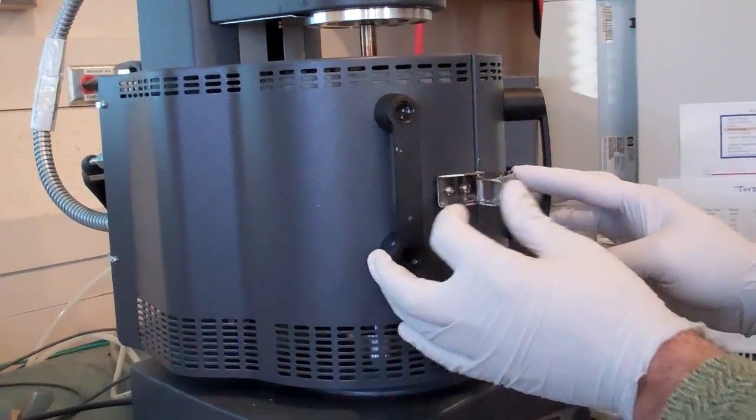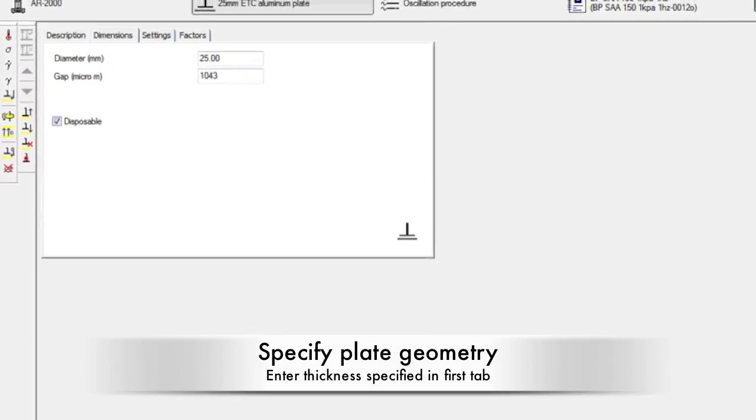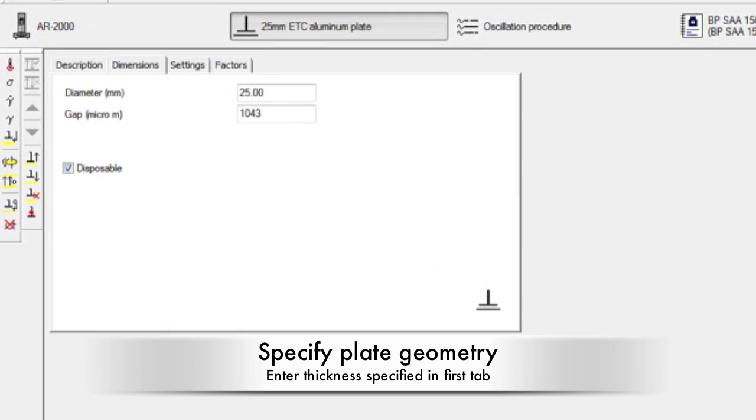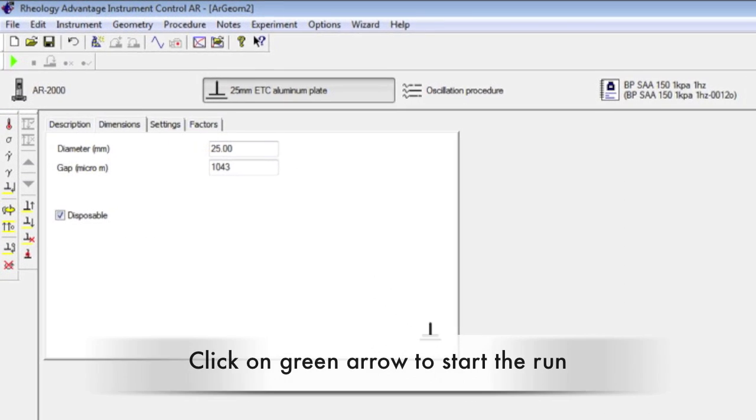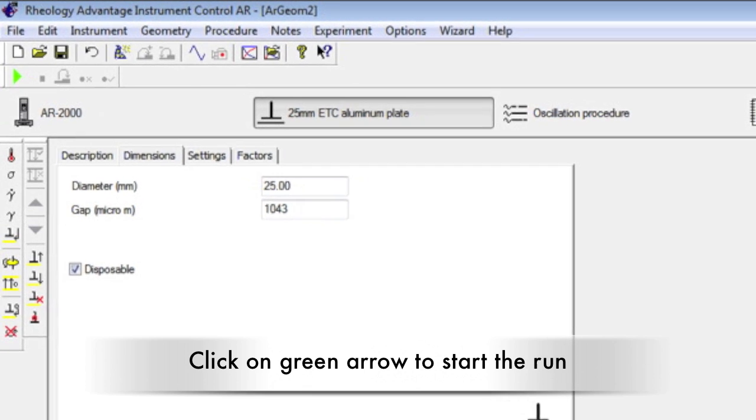Next, close the oven doors around the sample and lock it. In the second tab, the plate geometry will be specified. Record the thickness that is specified in the first tab. Check the parameters of your test and then click on the green arrow to start the run.